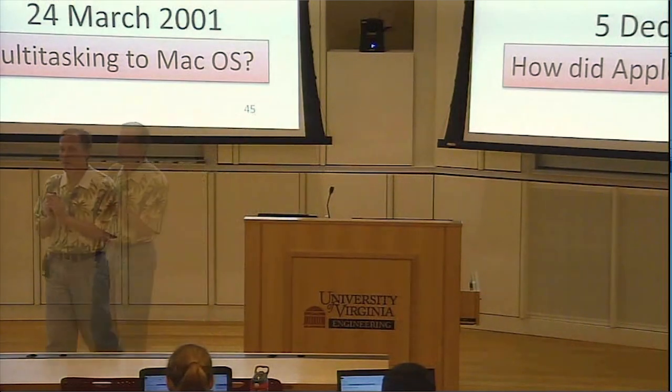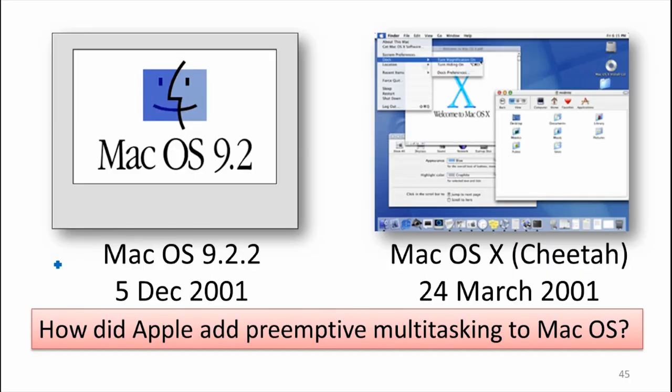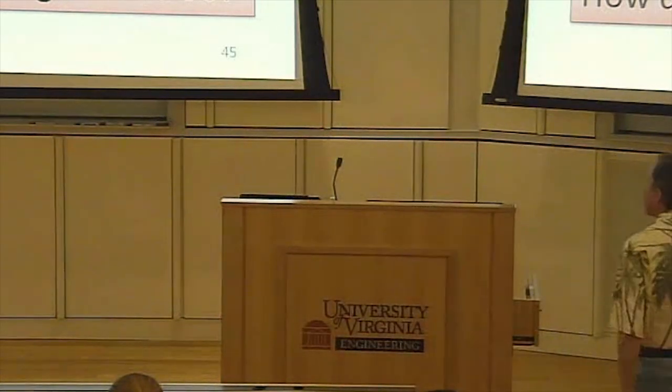How did Mac OS X end up with preemptive multitasking? It went from OS 9 in December 2001 to the first version of OS X, which did have preemptive multitasking. They completely threw everything out — it's not a small change to make; you basically have to start over completely, so there's no real connection between those two systems.